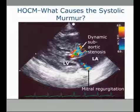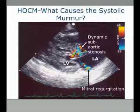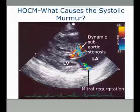So here in the outflow tract, we have color flow evidence of dynamic subaortic stenosis, and here we have a little jet of mitral regurgitation coming into the left atrium.